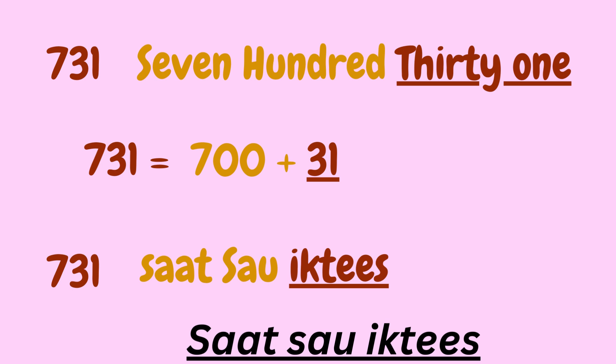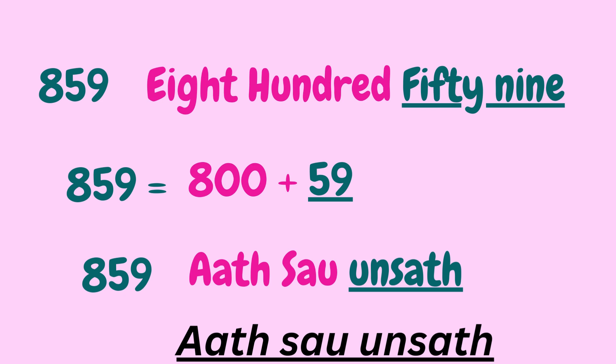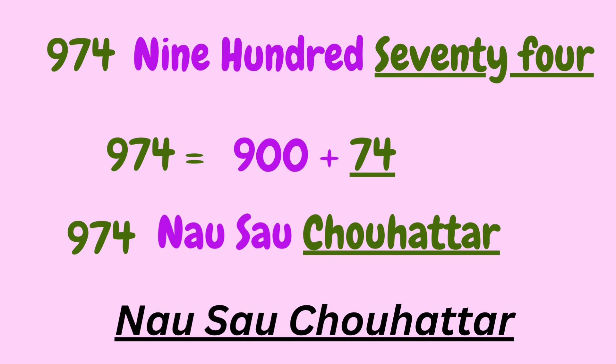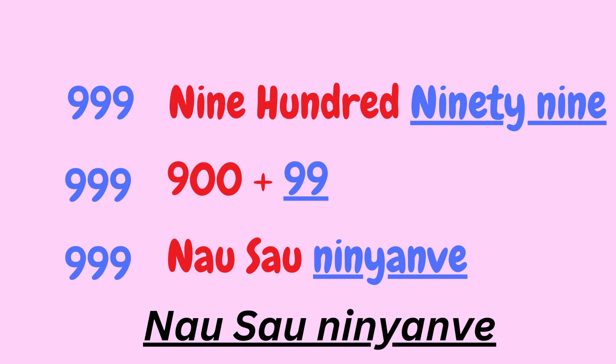Let's take the number 731 — that is 700 plus 31. The Hindi equivalent of 700 is 'saat saw' and 31 is 'ikhtis', so it becomes 'saat saw ikhtis'. 859 is 800 plus 59 — the Hindi equivalent of 800 is 'aat saw' and 59 is 'unsat', so it becomes 'aat saw unsat'. Let's take 974 — that is 900 plus 74. The Hindi equivalent of 900 is 'nao saw' and 74 is 'chohattar', so it becomes 'nao saw chohattar'. Or 999 — that is 900 plus 99. 900 is 'nao saw' and 99 is 'ninyanwe', so it becomes 'nao saw ninyanwe'.